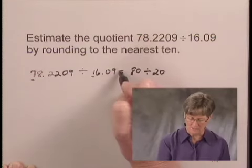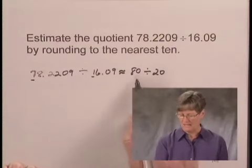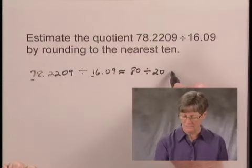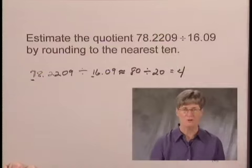And I should put approximately equal to here since we're estimating. And now we have 80 divided by 20. When we do that division, we get 4 for the estimate.